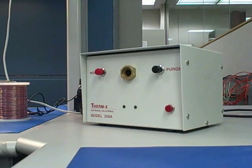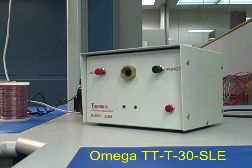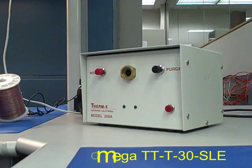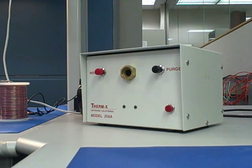We will start with type T Teflon coated thermocouple wire from Omega. The part number on that is TT-T-30-SLE. It's a copper and constantan wire, 30 gauge.